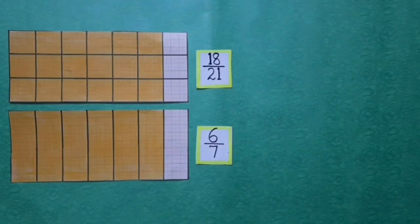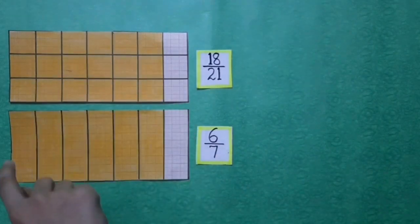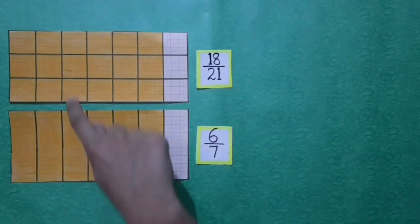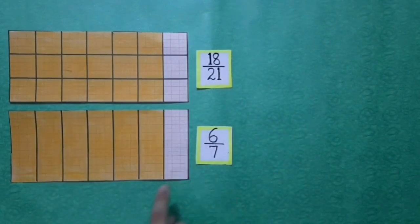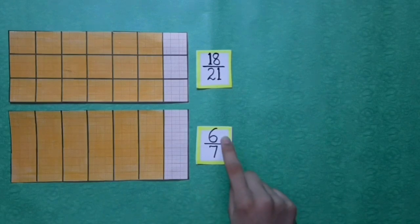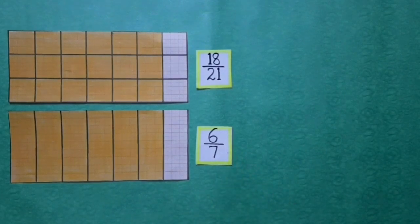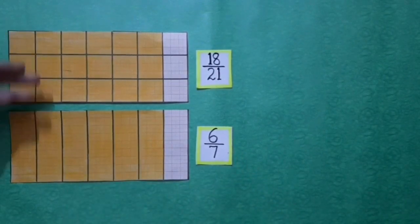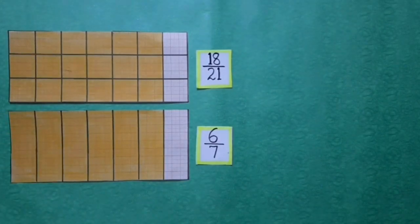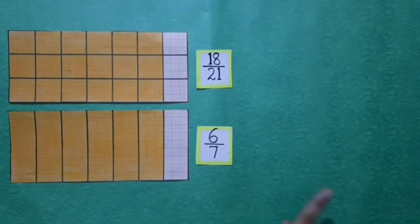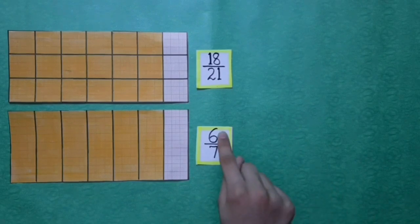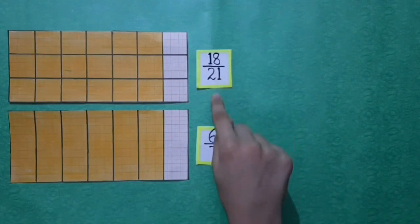Students, here I have two rectangular shaped papers. In the first paper, the fraction of the colored portion is 18 upon 21. And in the second, the fraction of the colored portion is 6 upon 7. Here you can see both are representing the same colored portion. So these are equivalent fractions. Fraction 6 upon 7 cannot be further divided into simplest form. So 6 upon 7 is the simplest form of 18 upon 21.